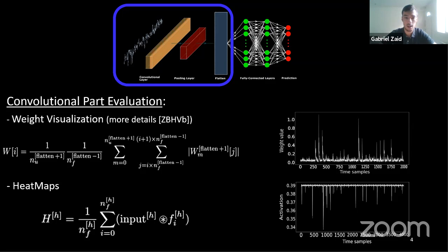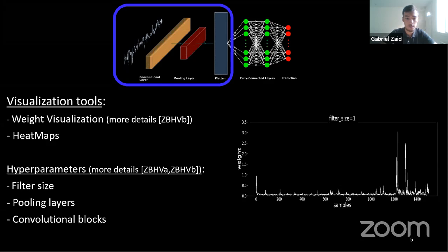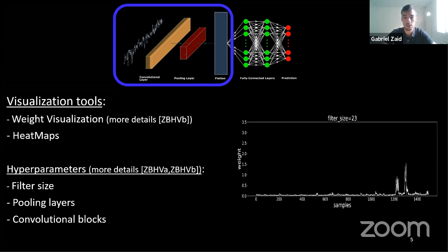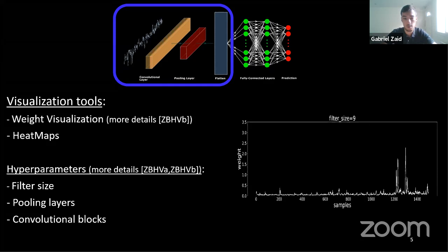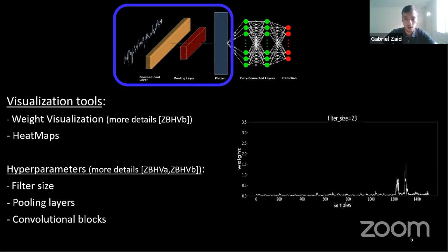The hyperparameters we investigated include filter size, pooling layers, and convolutional blocks. The paper explains how these hyperparameters affect point of interest detection. Due to time constraints I cannot detail everything here, so I recommend reading the reference paper.